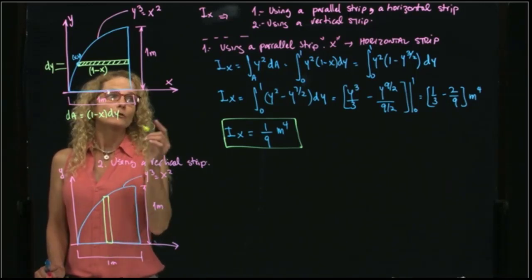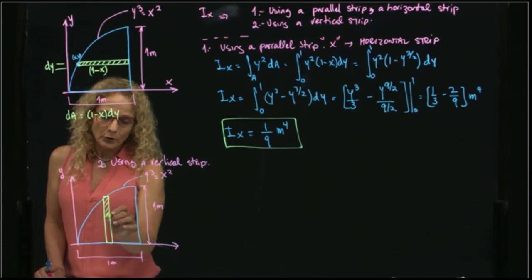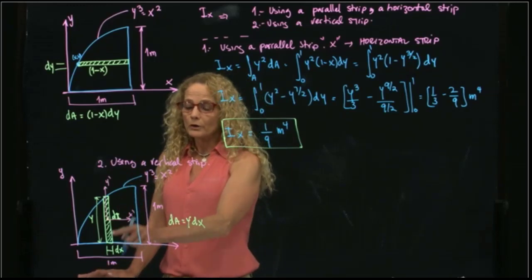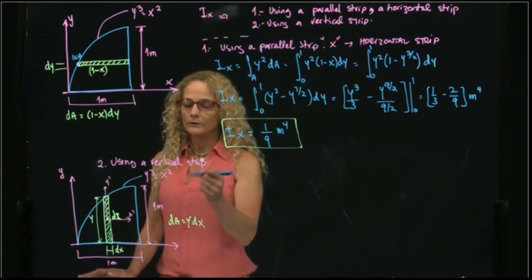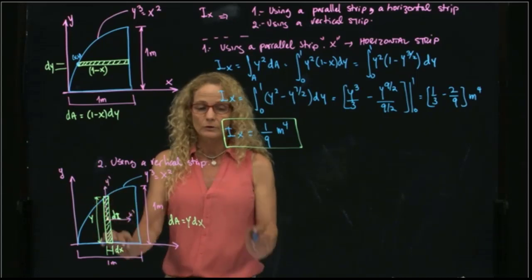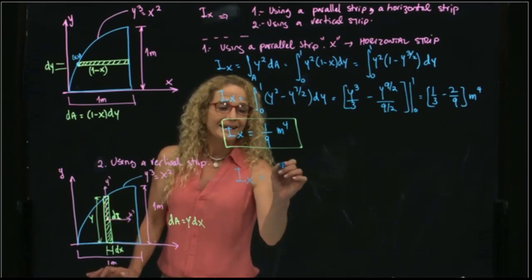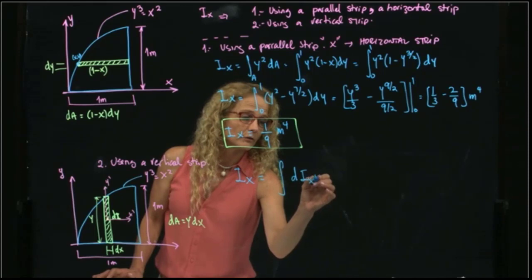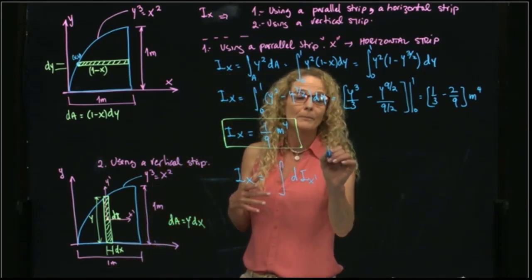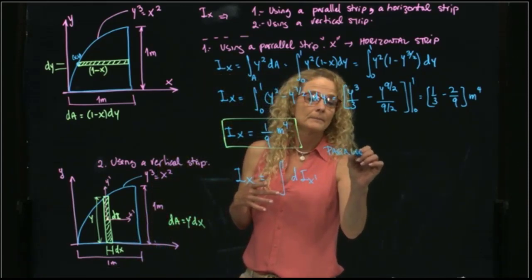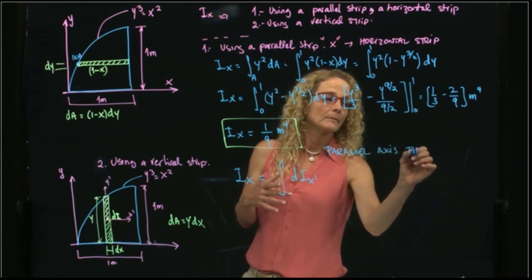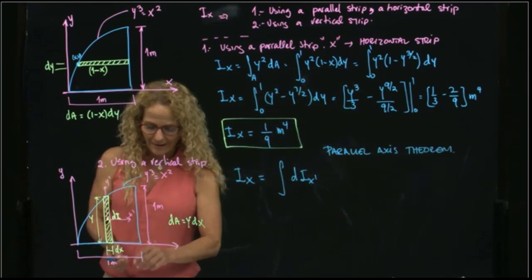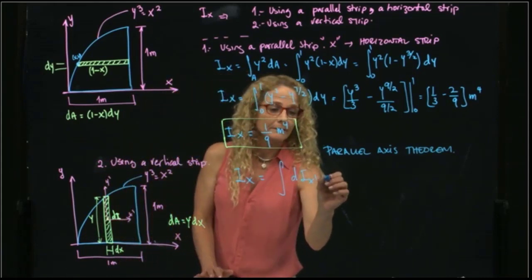And, as I said, now I'm going to use a vertical strip. My differential of area would be y dx. However, I have to use the inertia of this differential of area. So when we use a vertical strip, we have to take into consideration the inertia of that vertical strip.